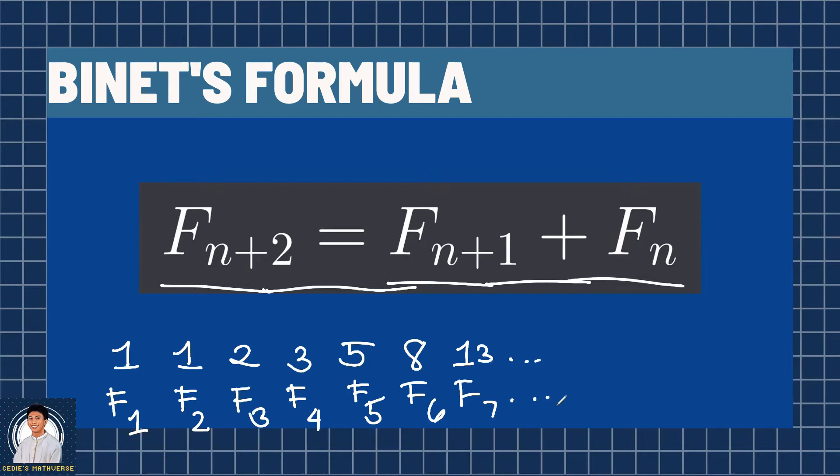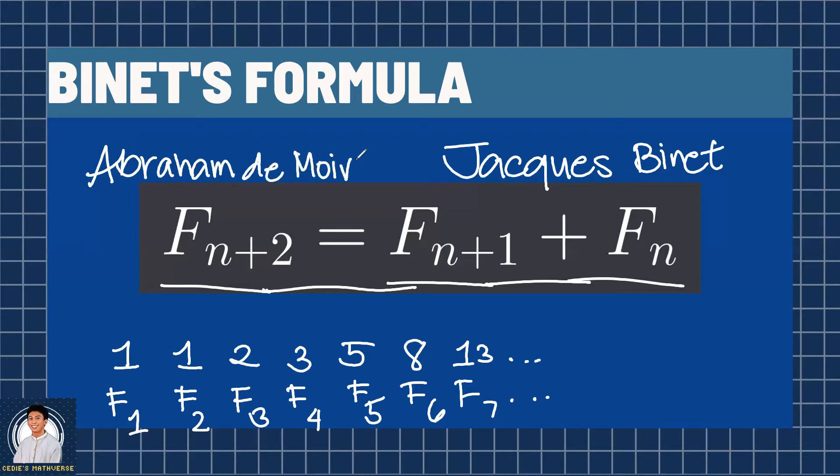But how can we express a term of a Fibonacci sequence in terms of some constants and n itself? Chuck Binet popularized a formula about finding the nth term of the Fibonacci sequence. However, it was discovered by Abraham DeMoivre before. This is called the Binet's formula. Let's get started.